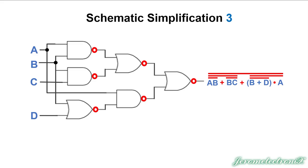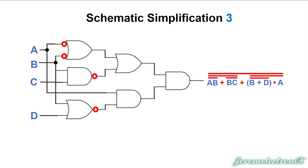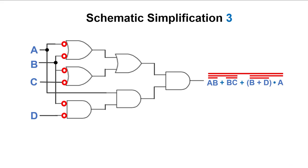Now we do the bubble pushing. Taking the bubble at the right, we push it back through the OR gate — it switches to an AND gate and puts a bubble on both inputs. Sliding those input bubbles close to the other NOT gates, we see double NOT gates that annihilate each other. Then pushing the bubble through the top AND gate changes it to an OR gate with bubbles on the inputs. Same for the gate below it. The OR gate on the bottom, when pushed through, changes to an AND gate. This is a more simplified schematic than what we started with.